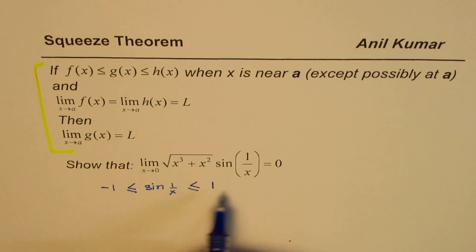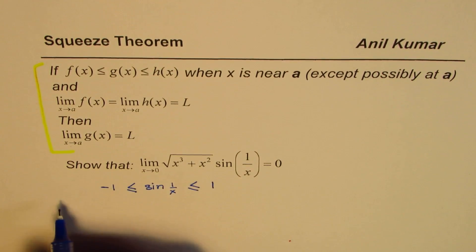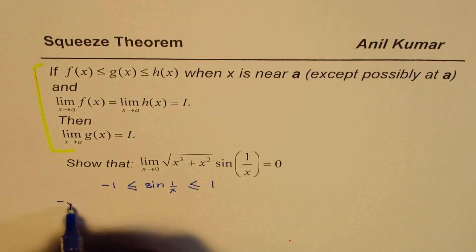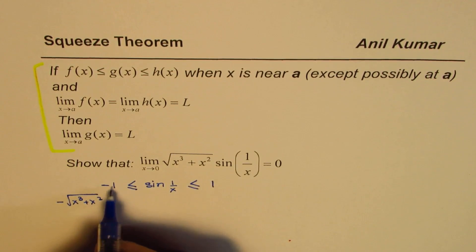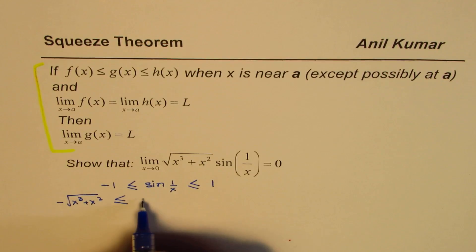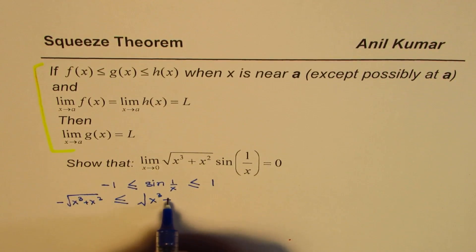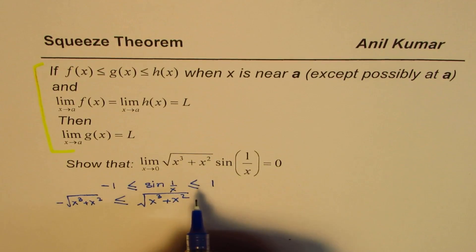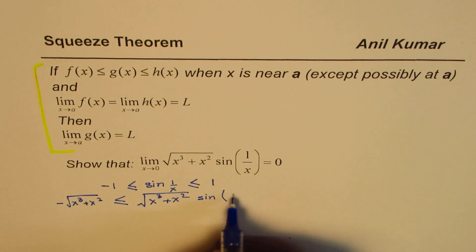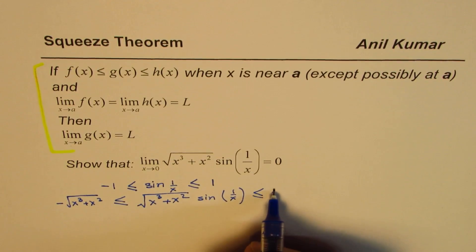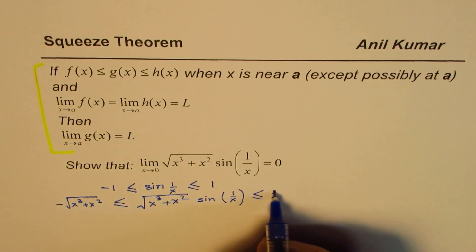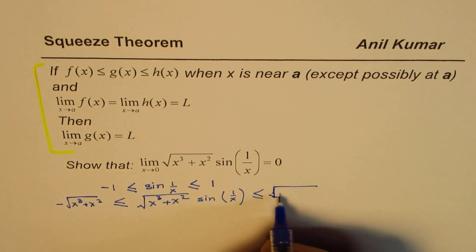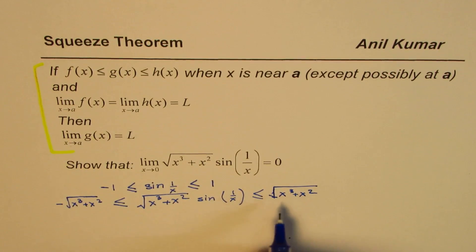Now we have a function which is sin(1/x) times the square root. The square root function is always positive, so you can multiply it to all three terms. When we multiply by the square root of (x³ + x²), we get: negative square root of (x³ + x²) ≤ square root of (x³ + x²)·sin(1/x) ≤ square root of (x³ + x²). So the expression is between these two values.